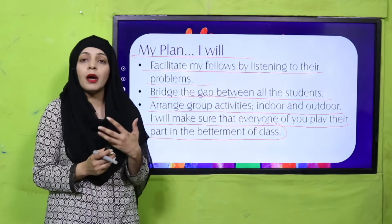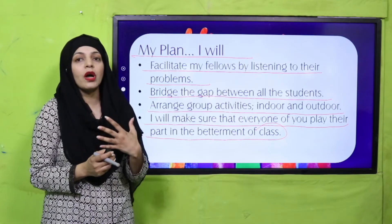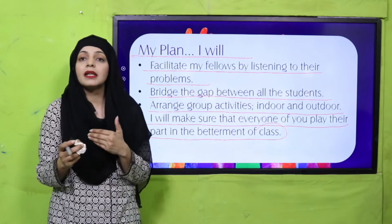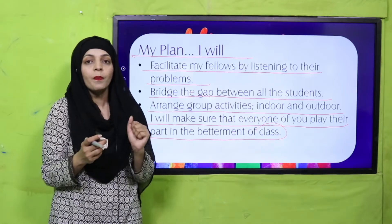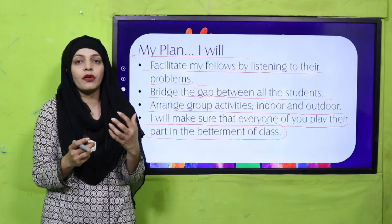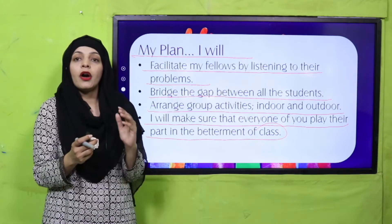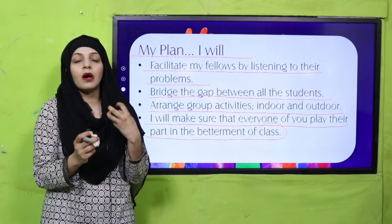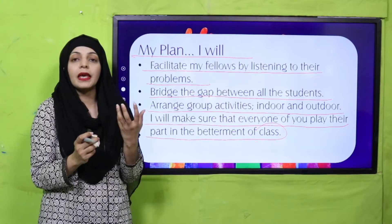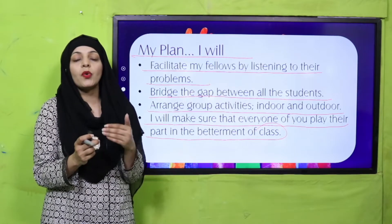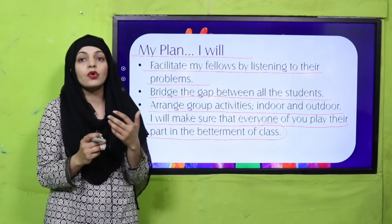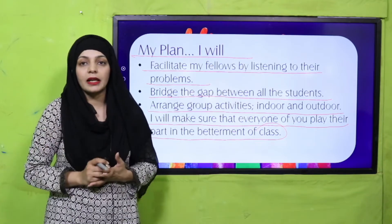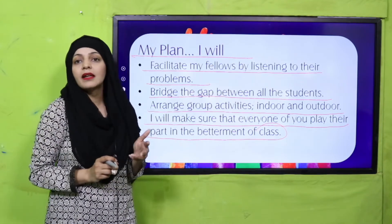As class representative, I will close the gaps between students, listen to everyone's problems and give them solutions, arrange indoor and outdoor activities with teachers, aur class ki betterment ke liye sab mil ke kaam karein. Students ko encourage karein ke apne manifesto ya aims and policies prepare karein, class ke saath discuss karein, aur teacher elections conduct karein taake students apne pasand ke representative ko select kar sakein. Pause the video, make your plan, and then conduct the elections.